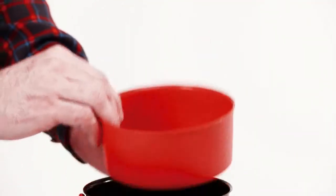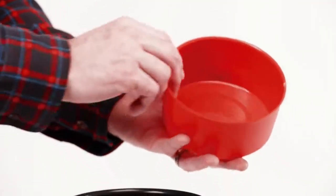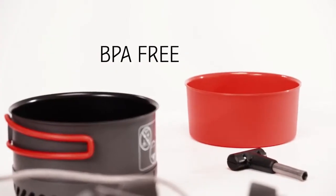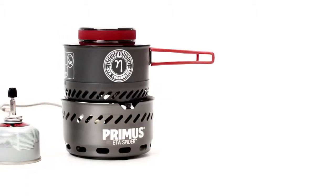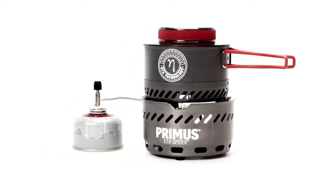In the pot, you have a plastic bowl to eat from. The 1.0-litre pot has the capacity to feed two hungry trekkers, yet the stove is small and light enough for one.